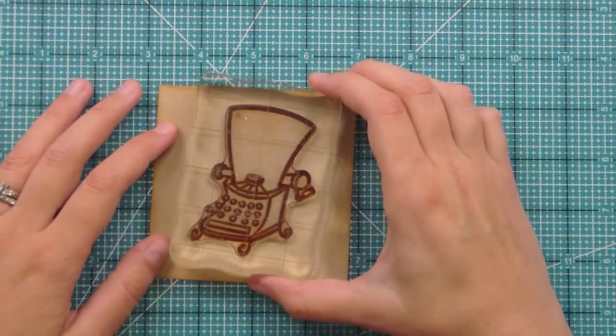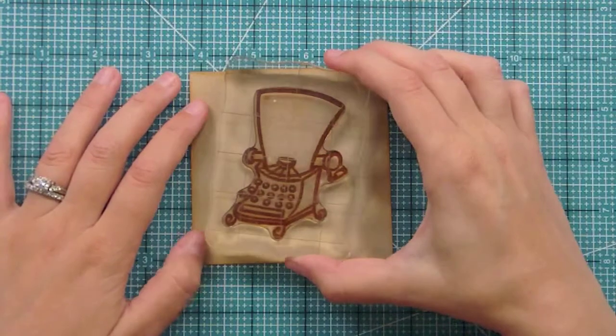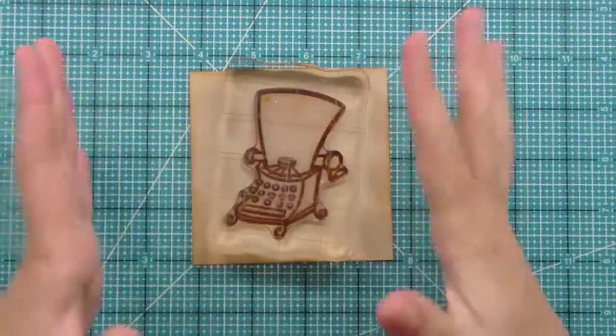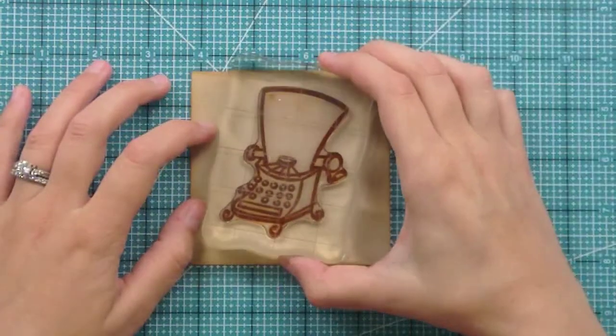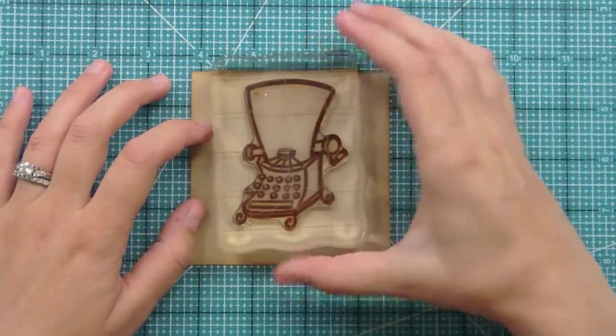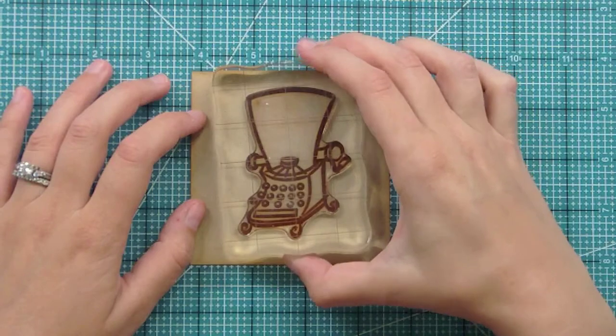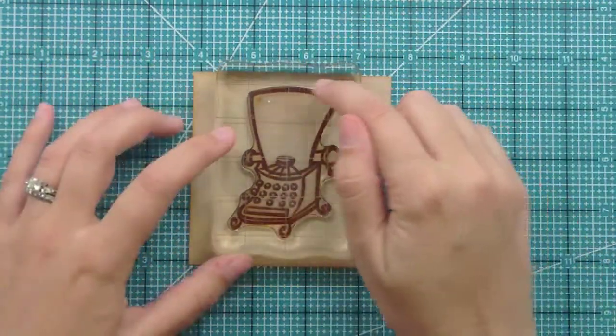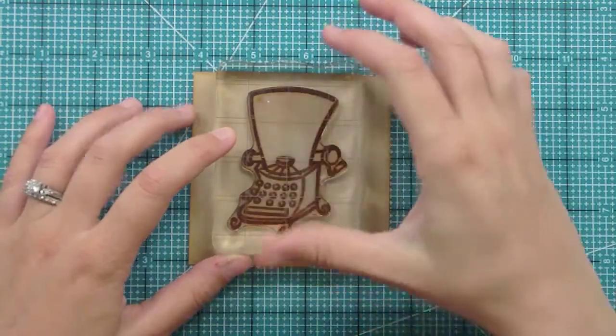Then you can also do it even more crooked to kind of look like the paper's coming out, like flowing off the page. What my preference is, is to line the top of the paper up with the top of my cardstock. That's just what I like to do. Some people have asked me, so I thought I would let you guys know.